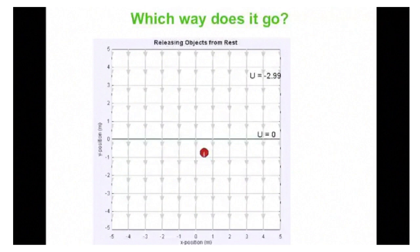What about if we let it go from below the U equals 0 point? Well, if we do that, it will fall away from U equals 0, it will fall in the direction of the field lines, in the direction of the force it experiences, and it falls toward decrease in potential energy.